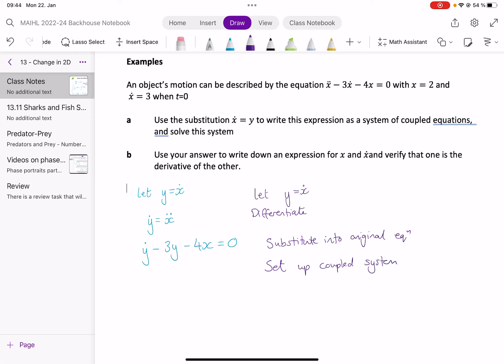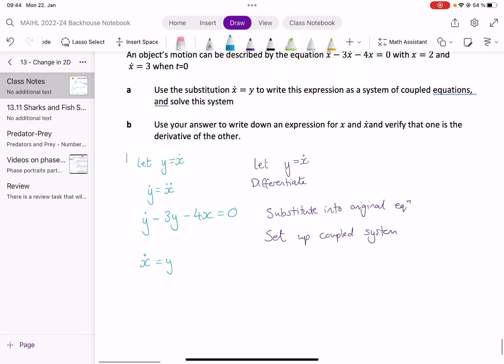Okay, I tend to start with the original variable. So I'll start with x dot. And we said x dot is equal to y. And the question told us to do that. And then the second equation comes from that substitution we did. So I'm going to do 4x plus 3y.